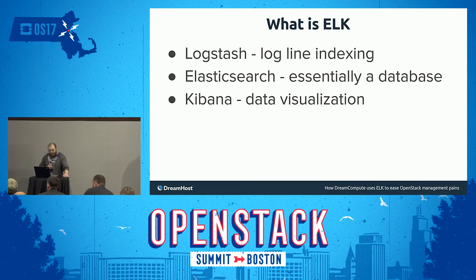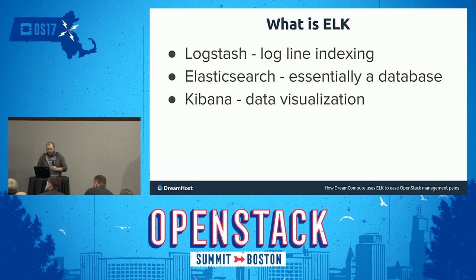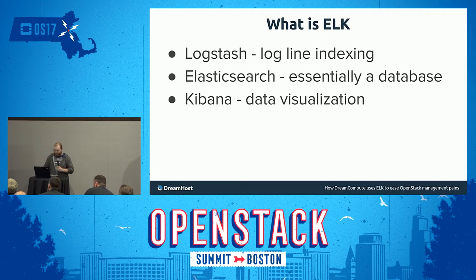A quick overview of what ELK is. Logstash is the L — it's a log line indexer. The idea is that as your applications generate logs, they send them to Logstash. Logstash then chunks up that log line, indexes it, and sends it to a database. Elasticsearch is that database that stores it. And then Kibana is used to visualize the data that is in that database, and we'll go over some of the ways that we can visualize that data.